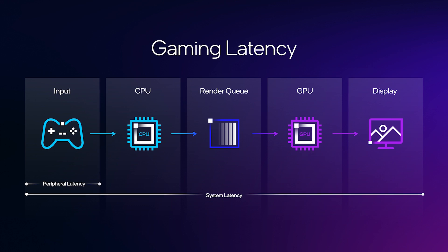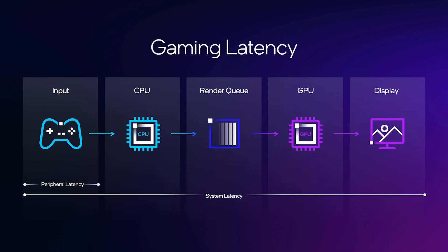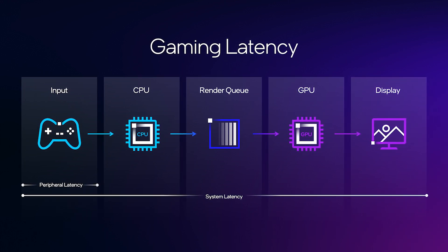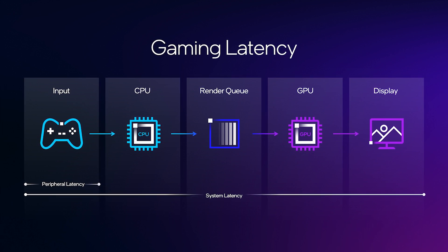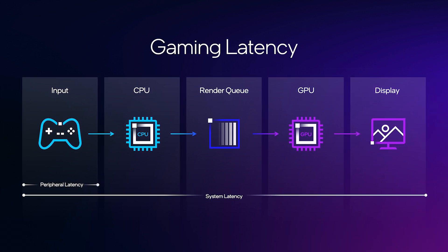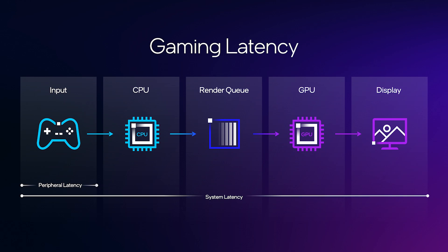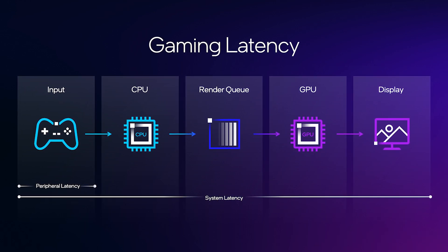To begin with, let's look at how graphics work — this will make it more clear where latency is coming from. On the left is when you get a click or move a mouse, and that's called peripheral latency. That input goes into the CPU, and the game engine will register the click and fire a gun. After the CPU, that frame gets generated and it's placed into a render queue, which is a waiting area until it can execute on the GPU. The GPU then turns commands into pixels, and finally those pixels go to the display.